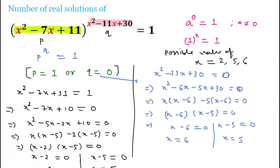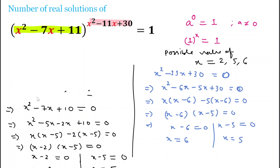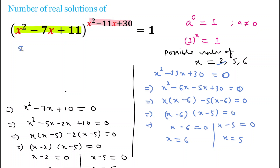Checking x = 2: the base becomes 4 - 14 + 11 = 1, so we get 1 to the power of anything, which equals 1. This satisfies the equation. Checking x = 5: the base becomes 25 - 35 + 11 = 1, so again 1 to any power equals 1. This is also satisfied.